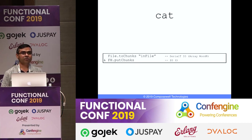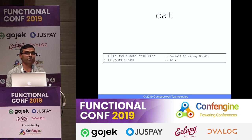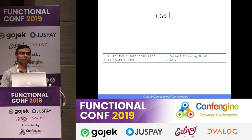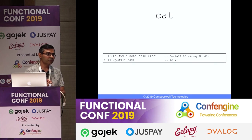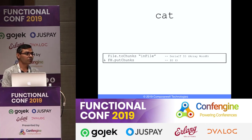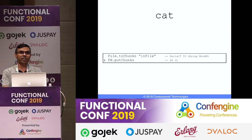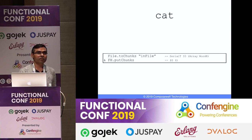Let's write a cat program. You take an input file, call File.toChunks to create a stream of chunks, and Fx.putChunks puts those chunks to standard output. That's all — you create a chunk stream from the file and fold it to standard output using putChunks. That's the definition of cat.